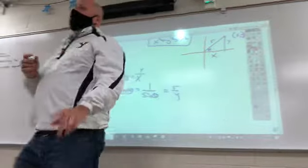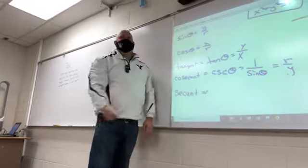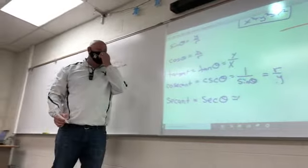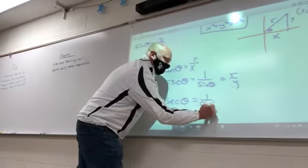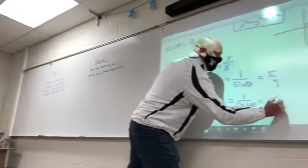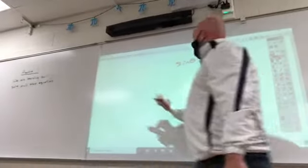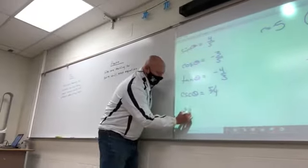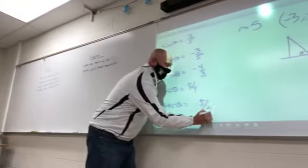The next one: we have secant, abbreviated SEC. If cosecant is the reciprocal of sine, then secant is the reciprocal of cosine. So if cosine is x over r, secant is r over x. Going back to our example with the point negative 3, 4 — secant is 5 over negative 3, or negative 5 thirds.